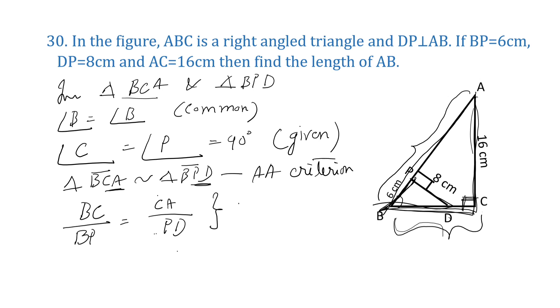Now substitute the values. We don't know the value of BC, we have to find it. BP is 6 centimeters. CA is 16 centimeters. PD is 8 centimeters. Let us solve. 8 into 2. So BC is equal to 12 centimeters.